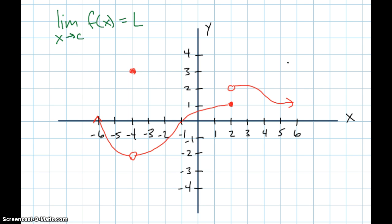Then we say that the limit as X approaches C of the function is that number at that point. Here's the picture of the graph of some piecewise function — probably not one that has a nice rule to describe it, but it is the graph of a function. Let's look at some limits and see if you think they exist. The first one: what's the limit as X approaches negative one of the function you see there?